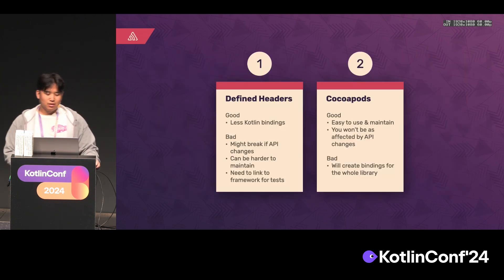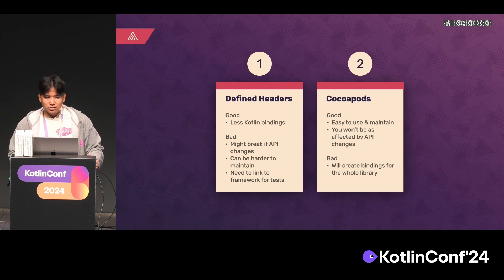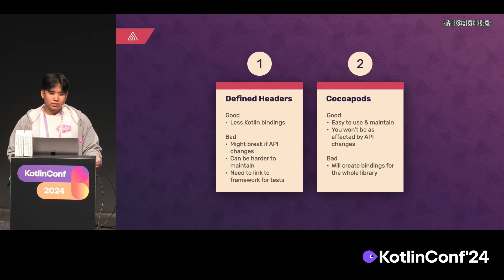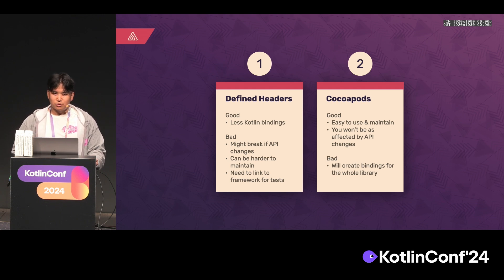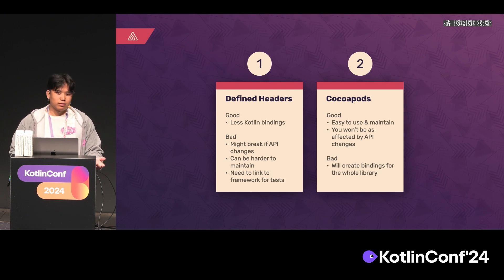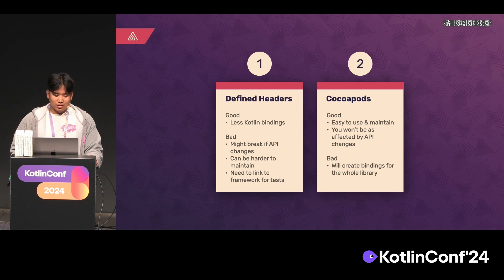So what are the pros and cons? With defined headers, you can strip all the stuff you don't need, which creates fewer Kotlin bindings. But the downside is it's prone to change — if your underlying framework changes often or you add new features, you always have to modify your headers again. Also, tests don't work out of the box; you have to link to the framework and take additional steps. With CocoaPods, it's very easy to use — you just add it and it creates bindings for every public header. But that's also a downside: it creates bindings for everything. So it really depends on requirements — if the API is stable enough, defined headers might be the way to go; otherwise, use CocoaPods.